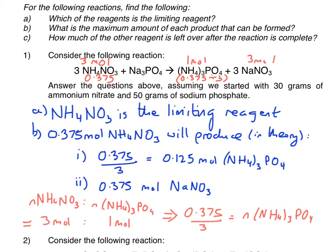If we look at the number of moles of ammonium nitrate to the number of moles of sodium nitrate, it's 3 moles to 3 moles, hence why it's a 1 to 1 mole ratio, which is why I put 0.375 moles as my second answer for Part B.